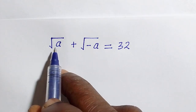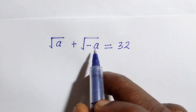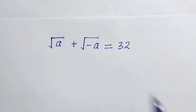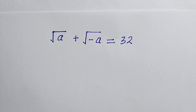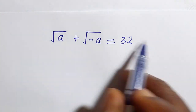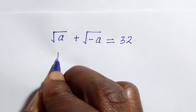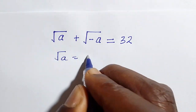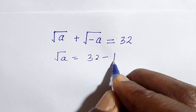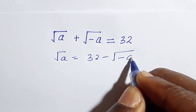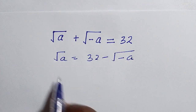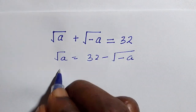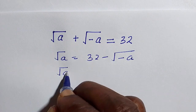So here we have root a and here we have root minus a. I want to find the solution that satisfies this. The first thing is we transfer this to the other side, so we have root a equals 32 minus the square root of minus a.